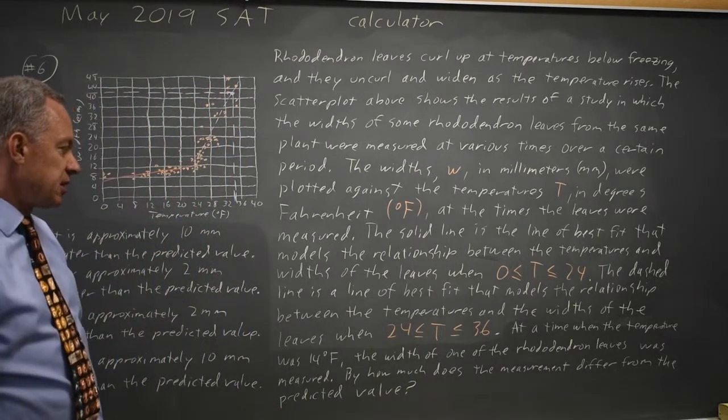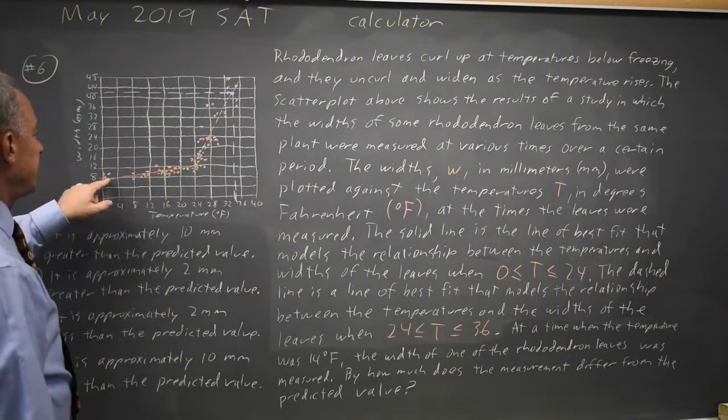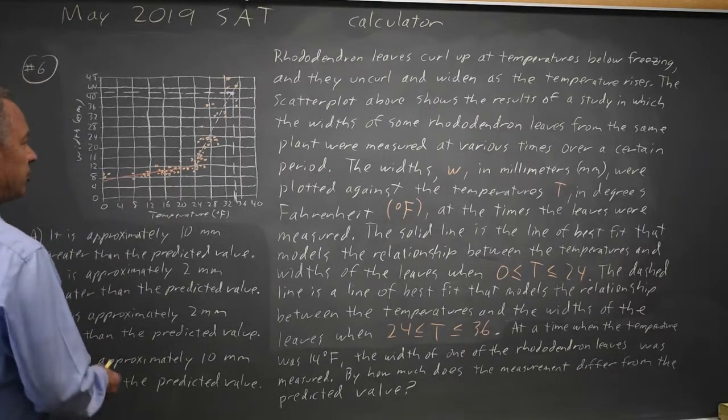By how much does the measurement differ from the predicted value? At 14 degrees, our predicted value is the line of best fit they described that I've shown in pink, if you can see that.